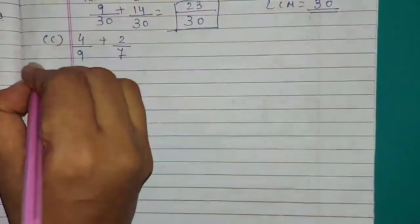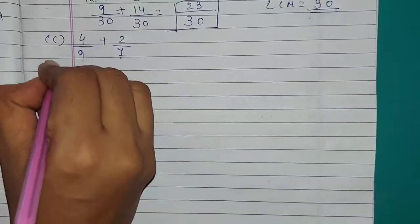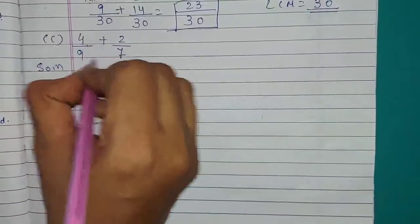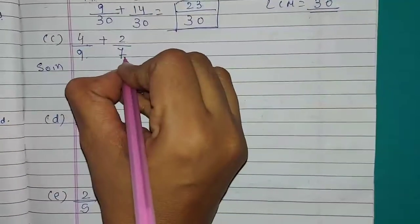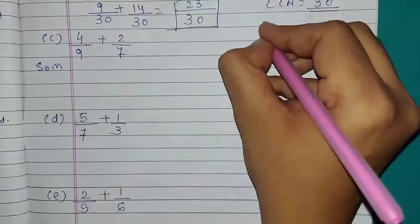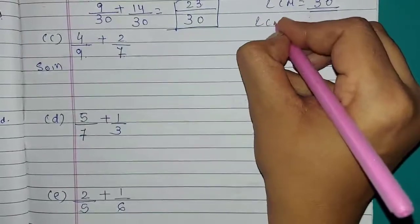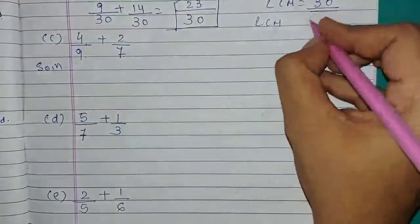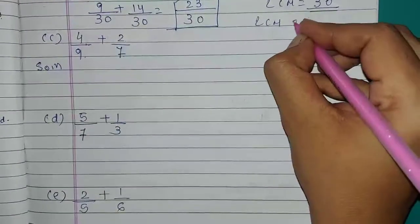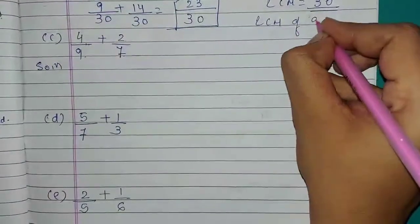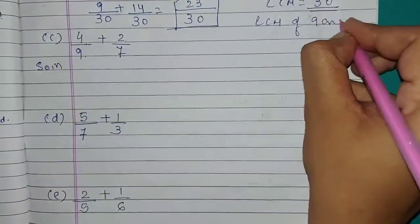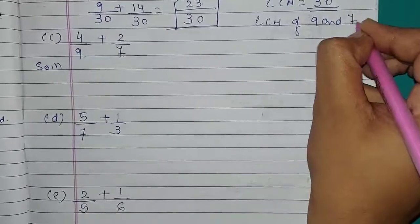Question number C: 4 upon 9 plus 2 upon 7. Here also it is unlike fractions. Hence we will take LCM of 9 and 7.